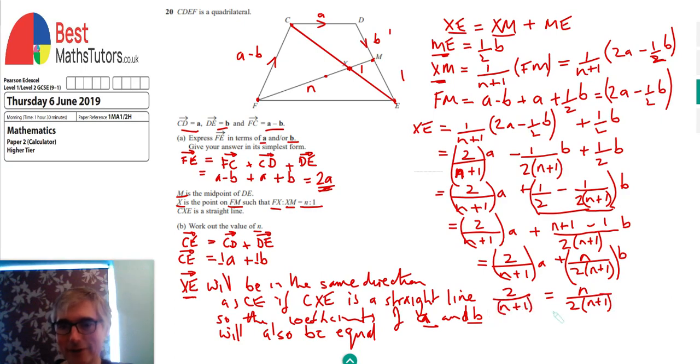Because I've got N plus one on both sides, I can multiply both sides by N plus one. The N plus ones will cancel, and I'll be left with 2 equals N over 2. We're at the final stage now. We just multiply both sides by 2, so the 2's cancel and N equals 4. We've completed it.